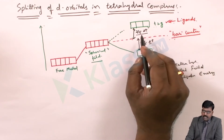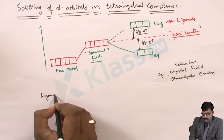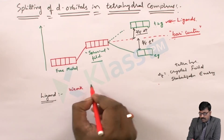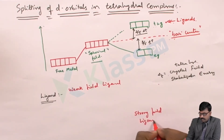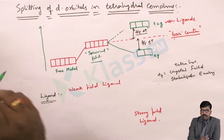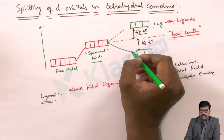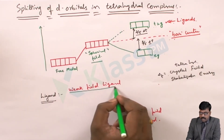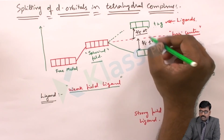This splitting of orbitals will purely depend on the ligand — how the ligand is. Because there are strong field and weak field ligands. Strong field ligands are those which will split the d orbitals in such a way that maximum splitting should be done. And the weak field ligands will split the d orbitals, or sometimes they cannot split the d orbitals, and the energy between the two levels will decrease.